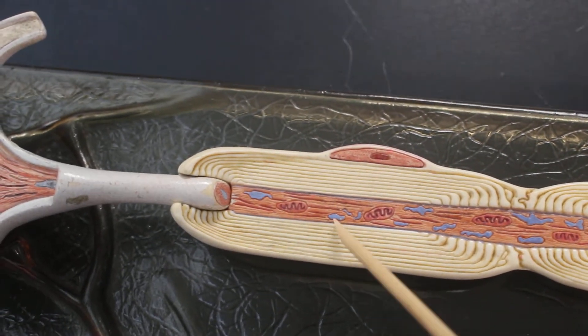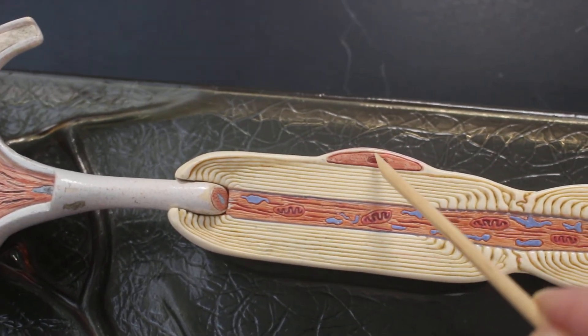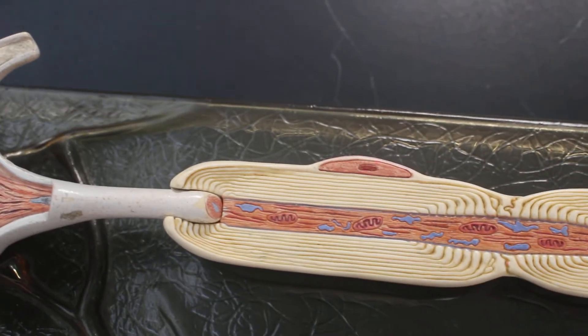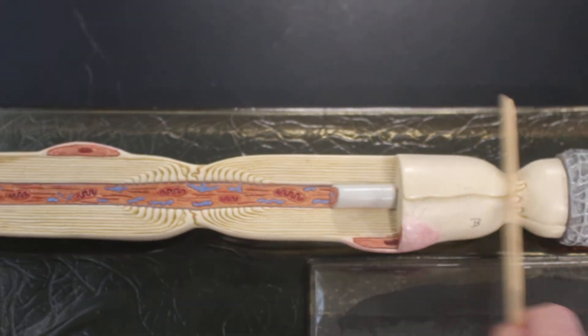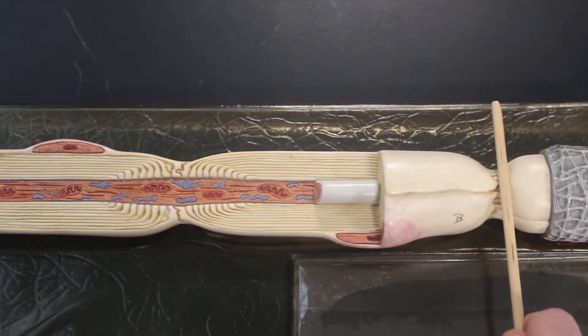These many layers make up the myelin sheath. This is the nucleus of the Schwann cell. The spaces between the sheaths here and here, these are the nodes of Ranvier.